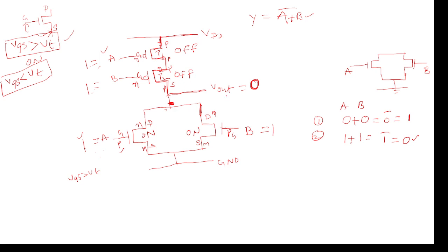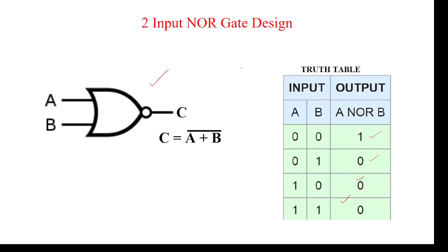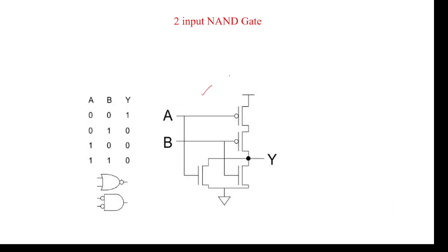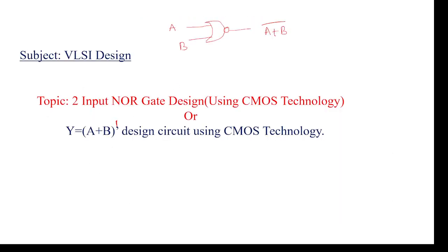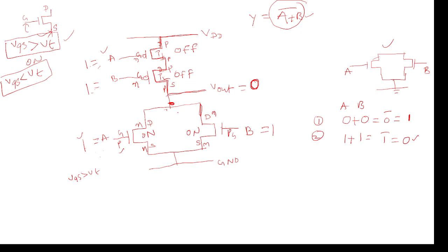In the remaining conditions we will also get the correct outputs. The design rule is: if addition (OR) is there, the pull-down network should be parallel; if multiplication (AND) is there, the pull-down network should be in series. This is CMOS technology because NMOS and PMOS are complementary to one another — NMOS parallel in pull-down and PMOS series in pull-up. That's why it is named CMOS technology for two-input NOR gate design. Thank you.